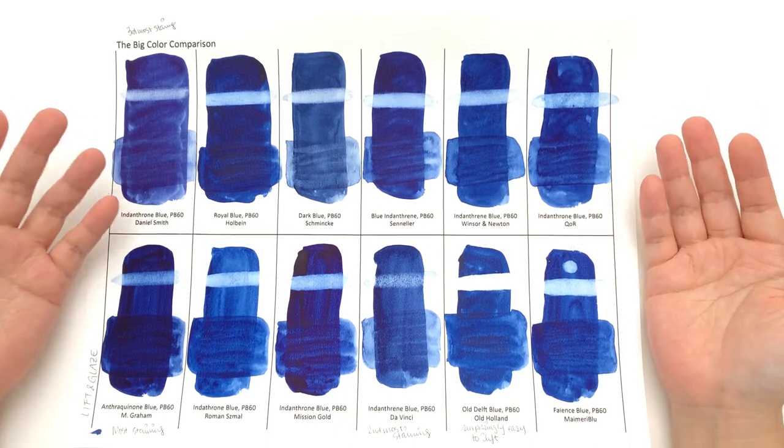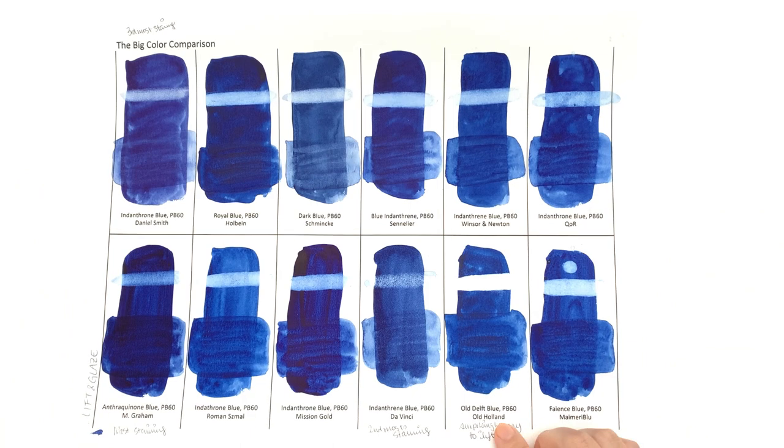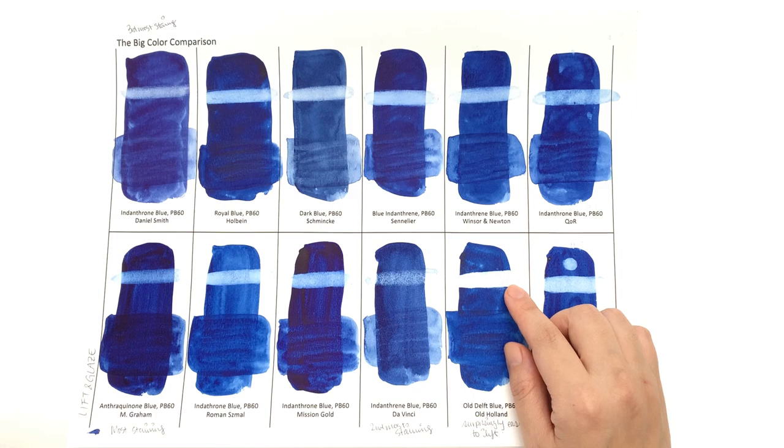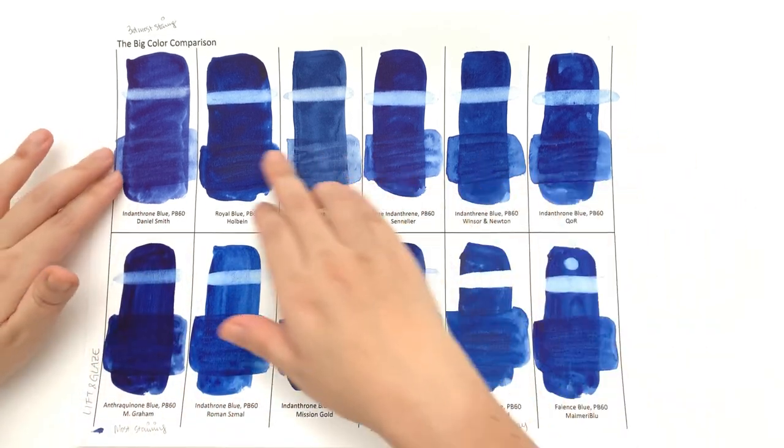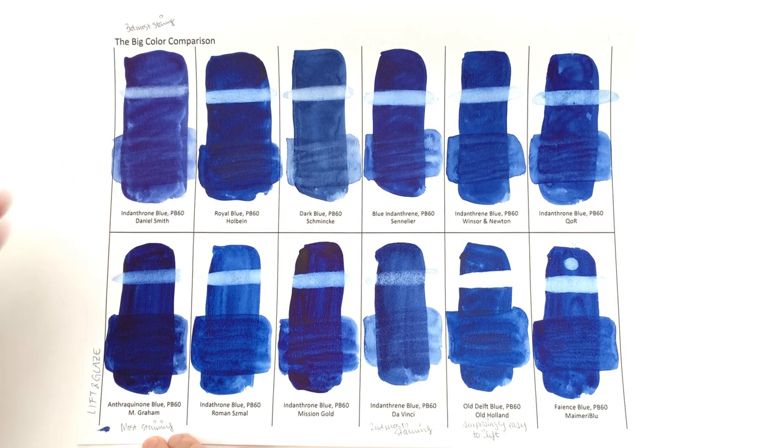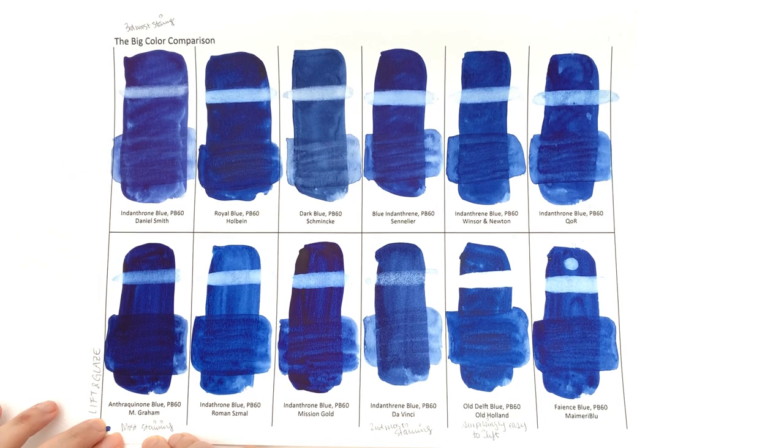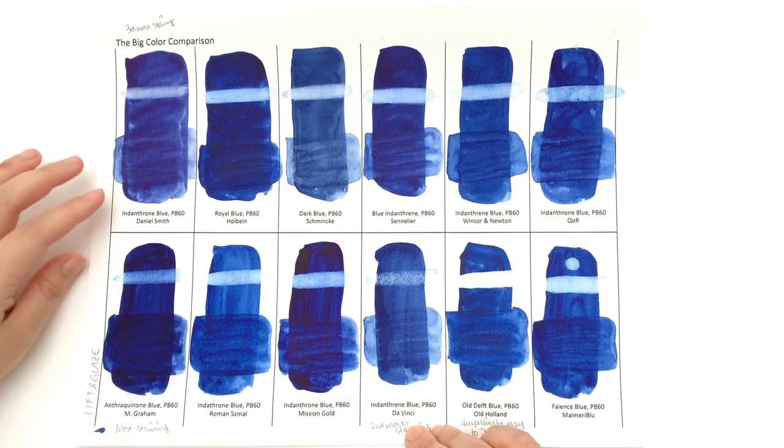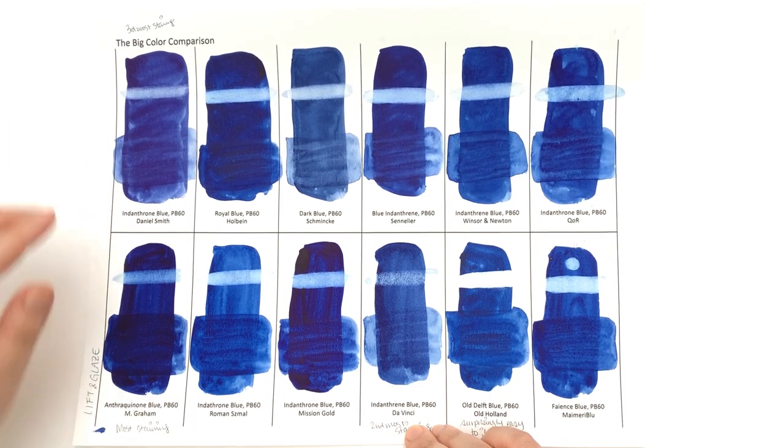And then we have the lift and glazes. Indanthrone Blue is going to be a staining color in general, and I say in general because for some reason Old Holland's one isn't staining. I don't know what happened here. All the other colors, as you can see, are pretty staining. I would say that the most staining one is the Anthroquinone Blue by M. Graham, followed by Da Vinci, and then followed by Daniel Smith.